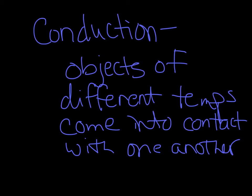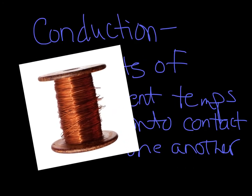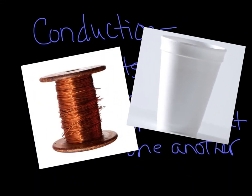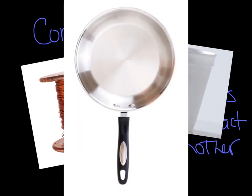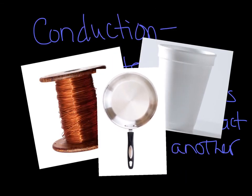There are three different types of materials involved here — conductors and insulators. This is an example of a conductor, here's an example of an insulator, and here is an example of both a conductor and an insulator — it has the insulating grip and the conducting pan surface.